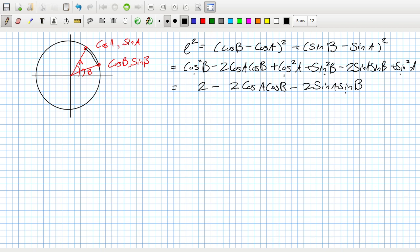For the next part, you use the cosine rule to get the distance. So L squared, and this is a unit circle, so it's 1 squared plus 1 squared minus twice 1 times 1 times cos the angle in between, which will be A minus B. So that's 2 minus 2 cos(A - B).